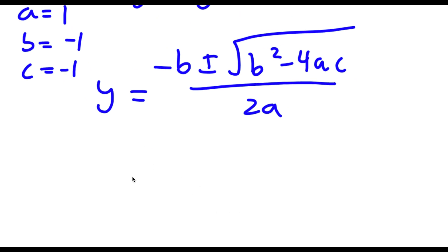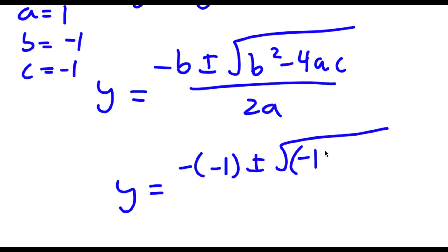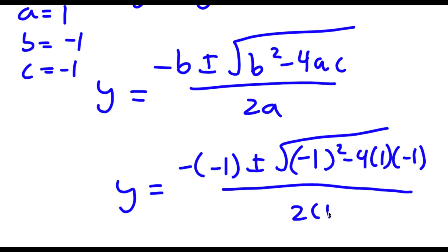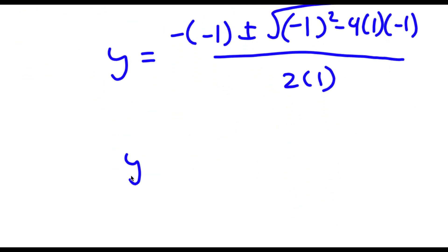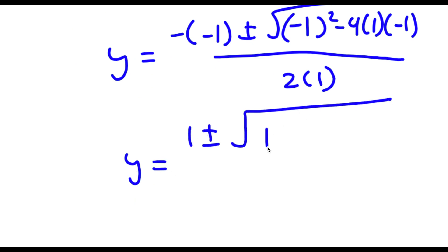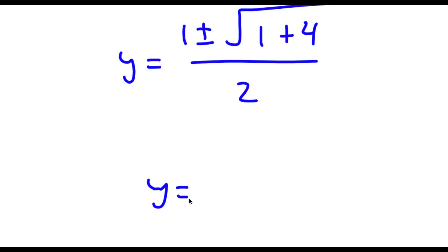So now I have negative negative 1, plus or minus the square root of negative 1 squared minus 4 times 1 times negative 1, all over 2 times 1. This is equal to 1 plus or minus the square root of 1 plus 4, all over 2. And now this is equal to 1 plus or minus the square root of 5, over 2.